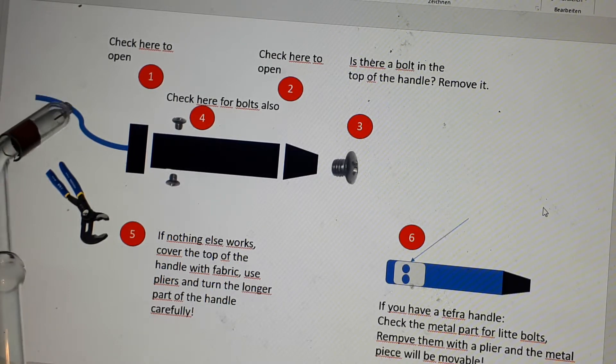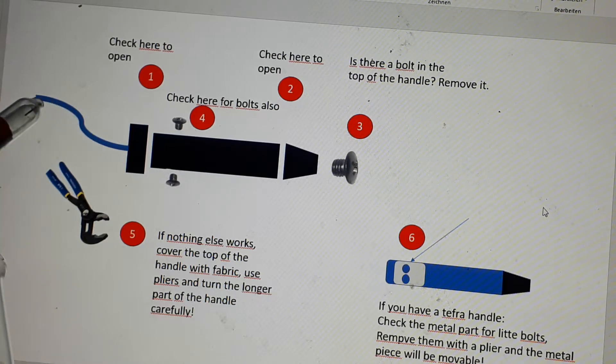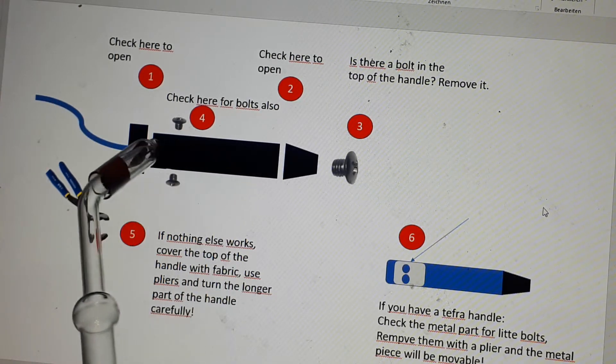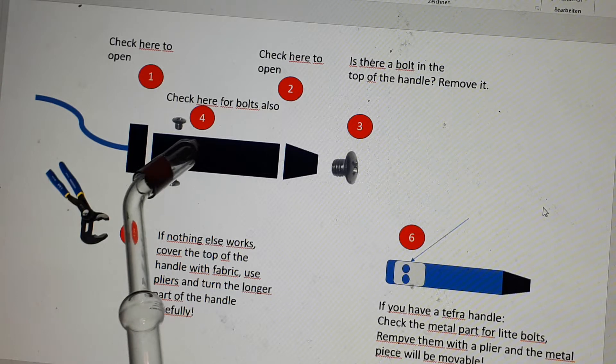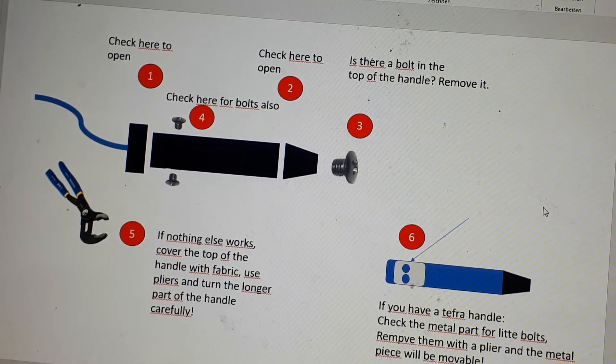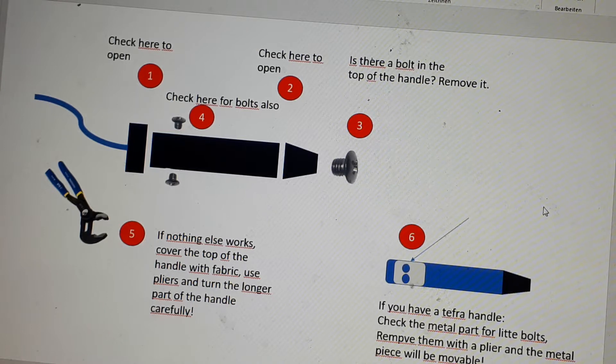This is necessary because if you want to remove this cable here, then you need to open the handle to get the connection of the cable to the Tesla coil inside the handle. So here is sometimes the question: how can you open this handle?